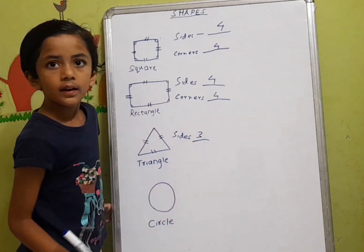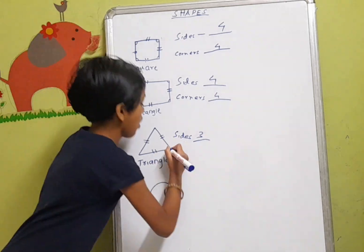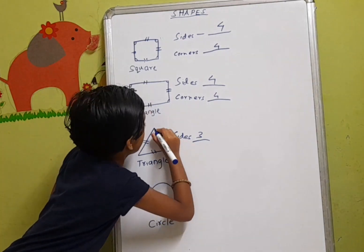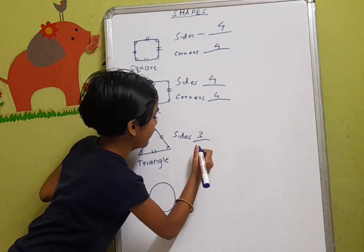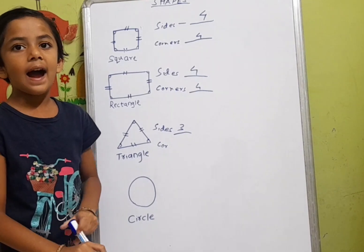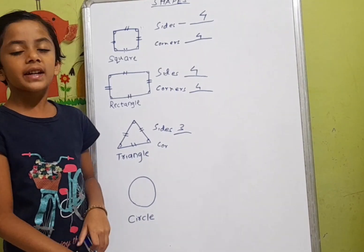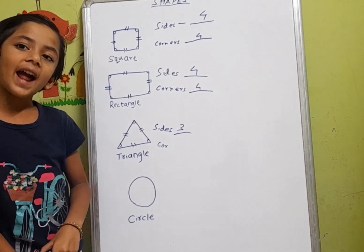Now let's count corners: one, two, three. There are three corners in a triangle.